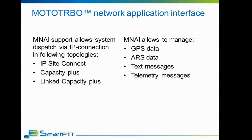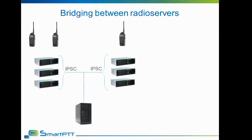The next feature is bridging between radio servers. Previously, SmartPTT had the ability to bridge IP-Site Connect and Capacity Plus networks. For example, suppose there are two independent IP-Site Connect networks connected to one radio server. If you create a bridge between them, when a subscriber from one IP-Site Connect calls a bridged group, not only local subscribers will respond, but subscribers from the bridged network belonging to the same group will respond too.